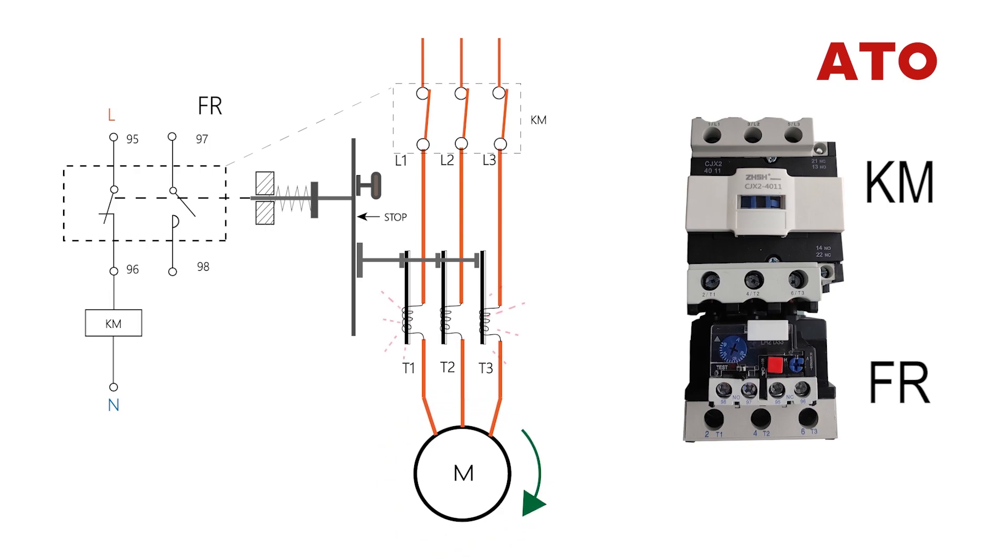When the motor is running normally, the heat produced by the thermal element will bend bi-metallic sheets, but it's not adequate to trigger the contacts of the relay.